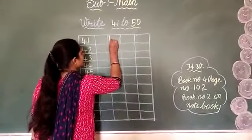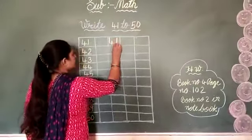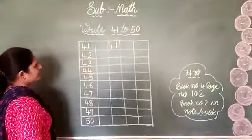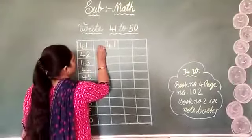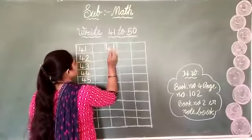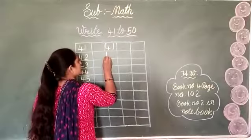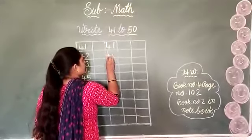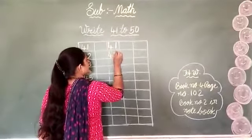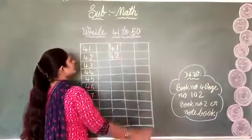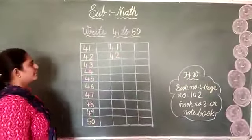First, 41. We will write in the first box: 4, 1, 41. Write it again: 4, 1, 41. In the second box, write 4, 2, 42. Again, 4, 2, 42.